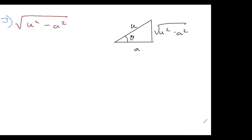For the pattern √(u²-a²), I've drawn the appropriate triangle. In this case u is the hypotenuse, the adjacent side is labeled a, and the opposite side is √(u²-a²). The secant sets up this one: secant of theta equals u over a, so u = a sec θ.